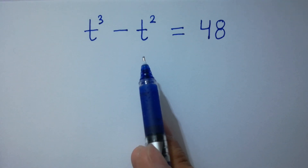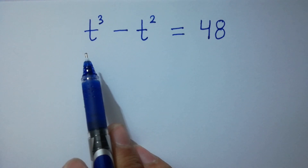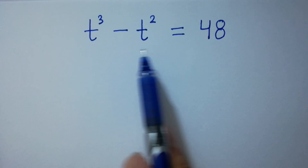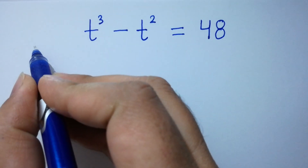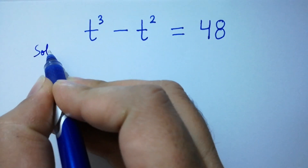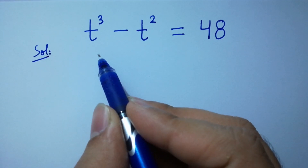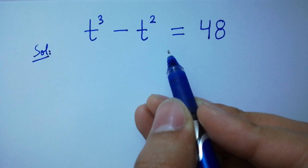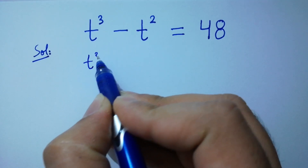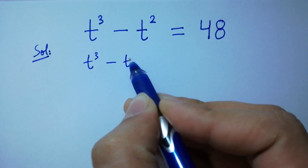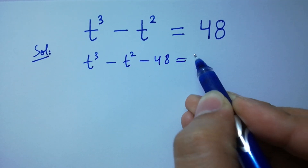Hello friends, find the value of t if t cubed minus t squared equals 48. Let's have a solution. t cubed minus t squared equals 48 can be written as t cubed minus t squared minus 48 equals zero.